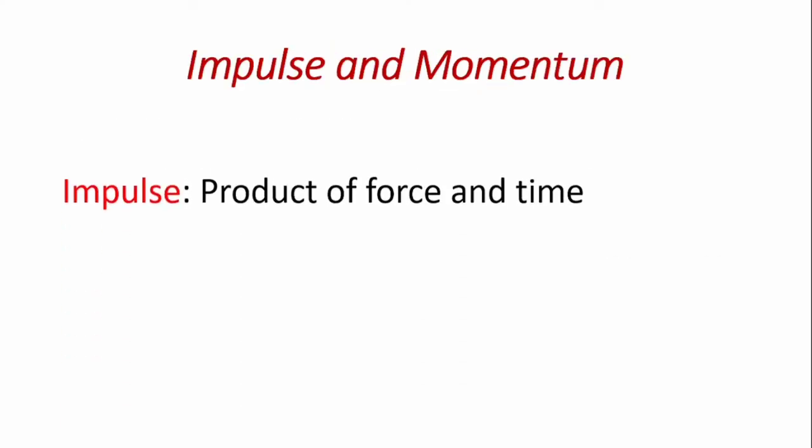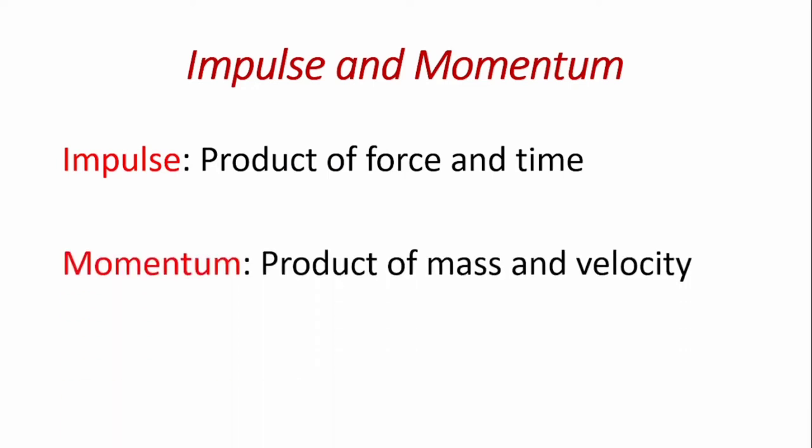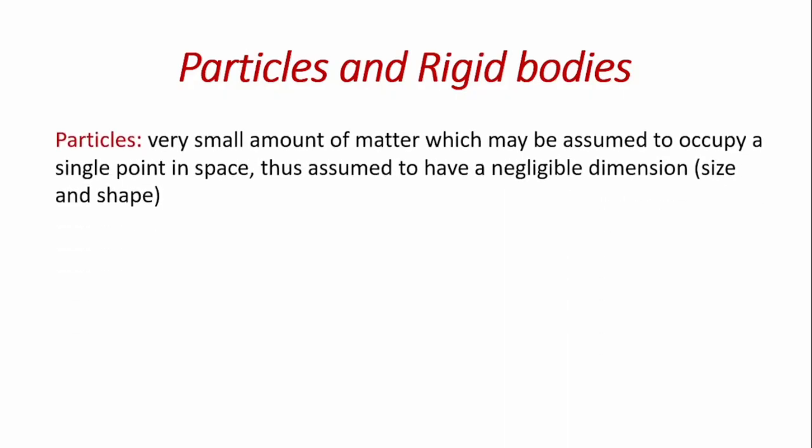Impulse and momentum. Impulse is just the product of force and time, while momentum is the product of mass and velocity. Particles and rigid body. A particle is a very small amount of matter which may be assumed to occupy a single point in space. First, one can assume it to have negligible dimension, both size and shape. And it's used for analysis in dynamics.